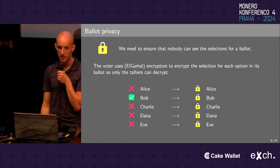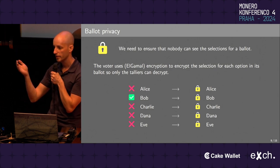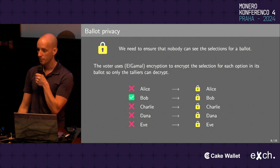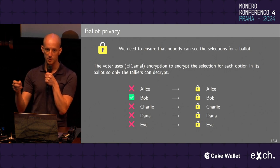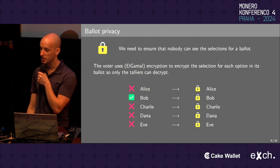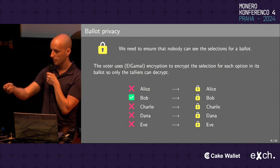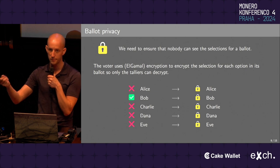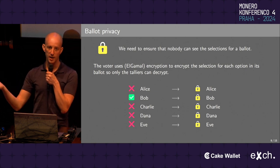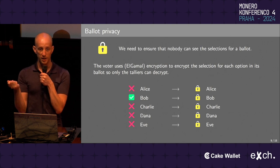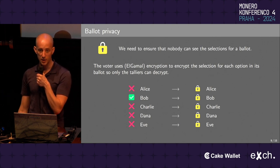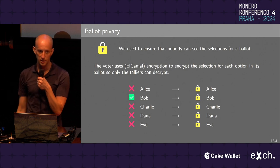If the election is a vote between Alice, Bob, Charlie, Dana, or Eve, and the voter wants to choose Bob, they don't simply put that into a ballot and throw it on the ledger — that would immediately break ballot privacy. Instead, the voter encrypts the choice for Alice as zero, Bob as yes, and Charlie, Dana, and Eve as no. But to an outside observer, all of these just look like locked blobs.